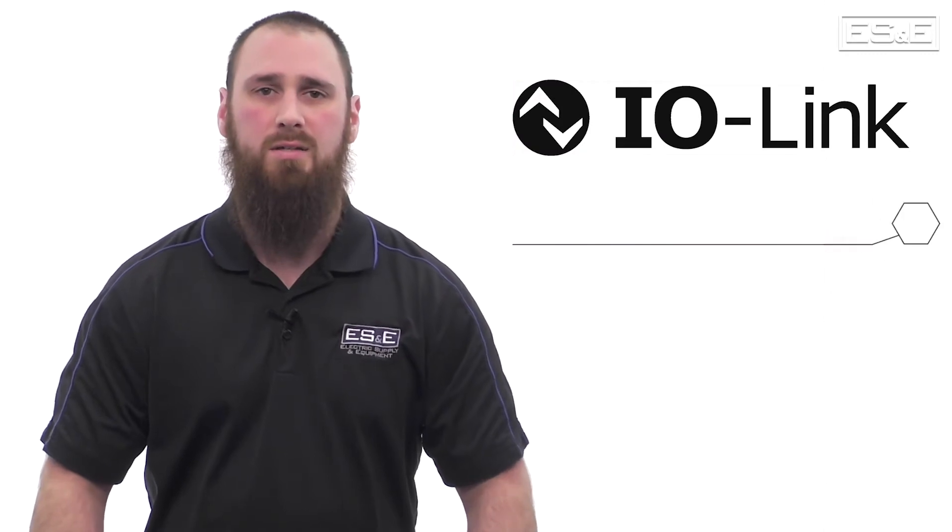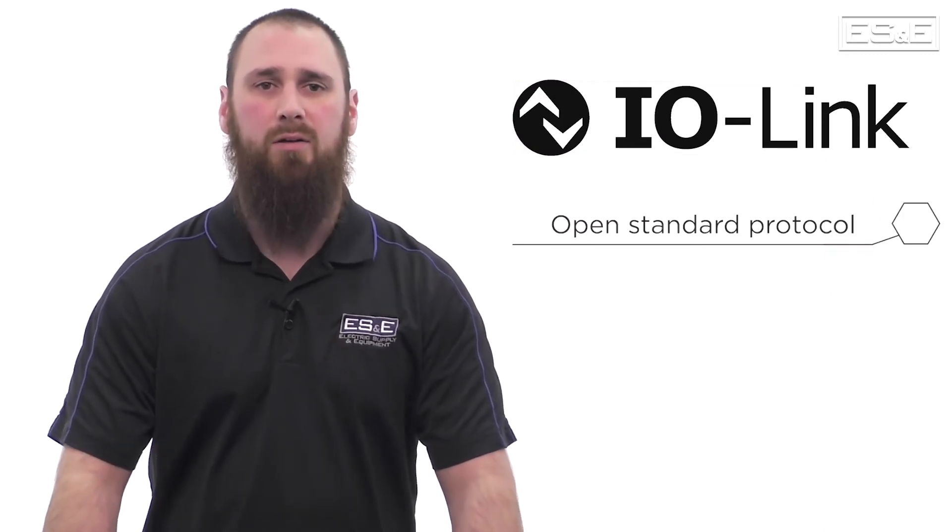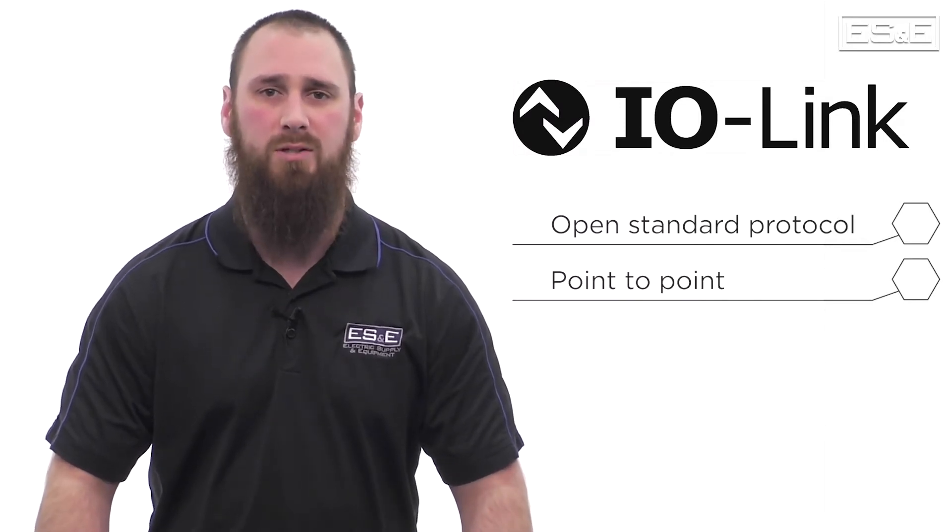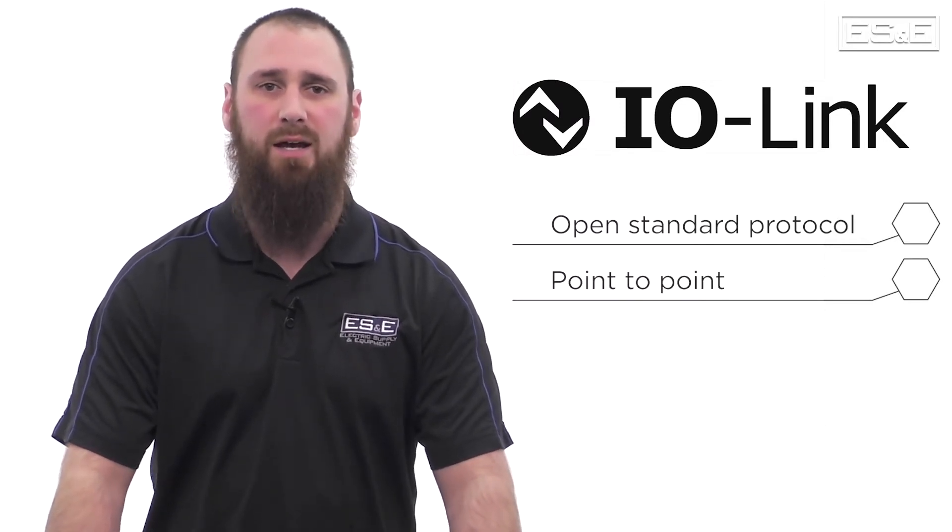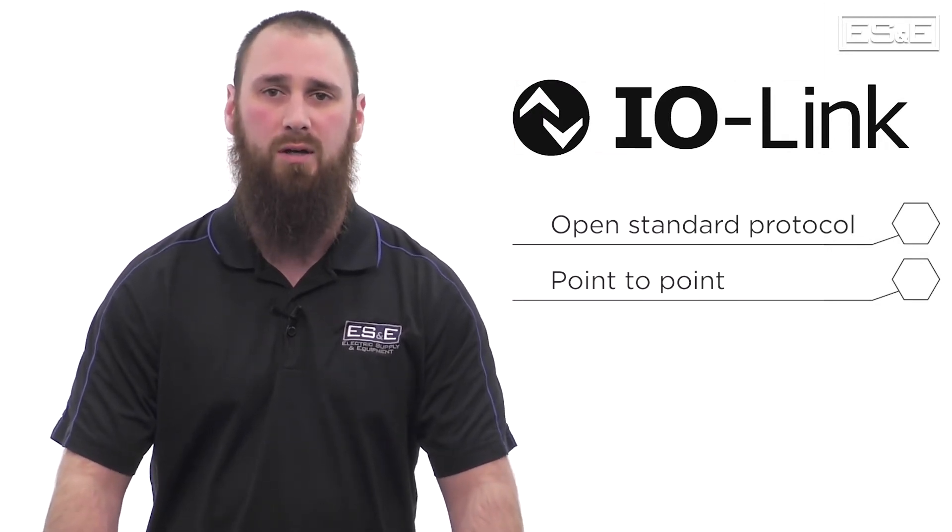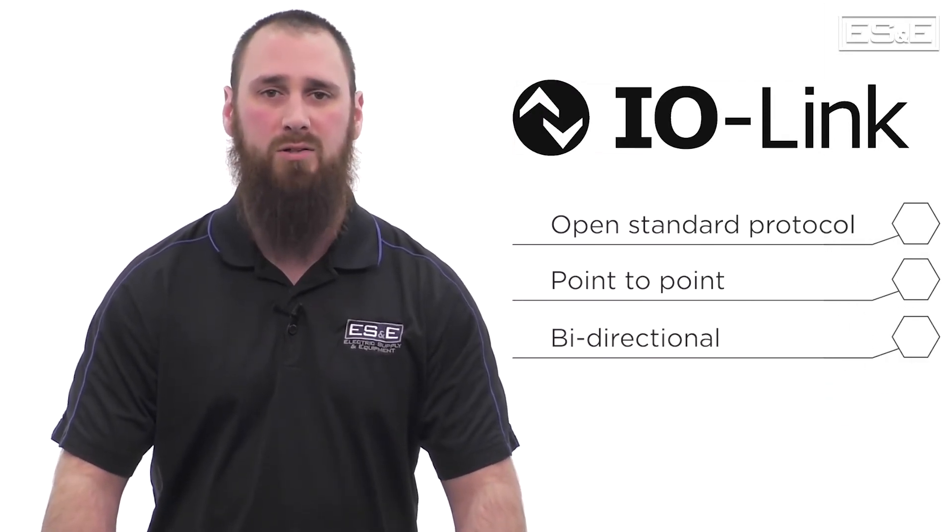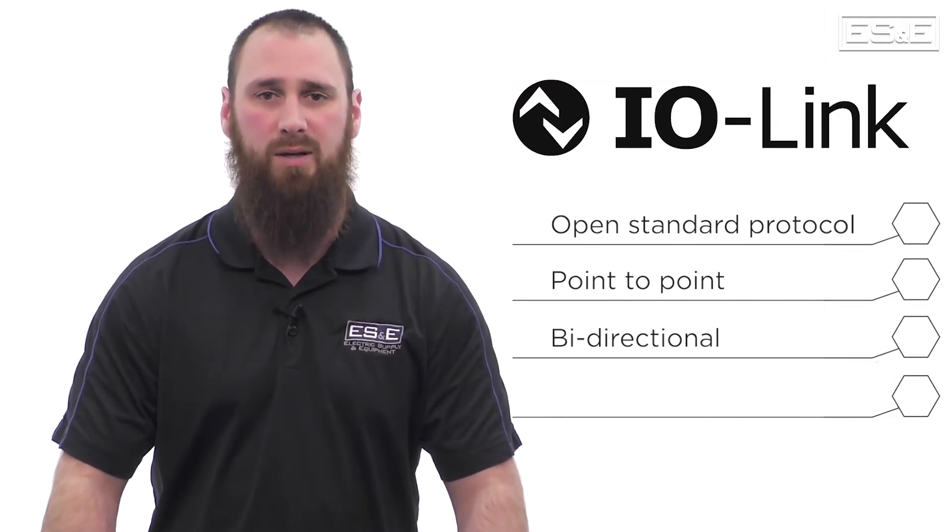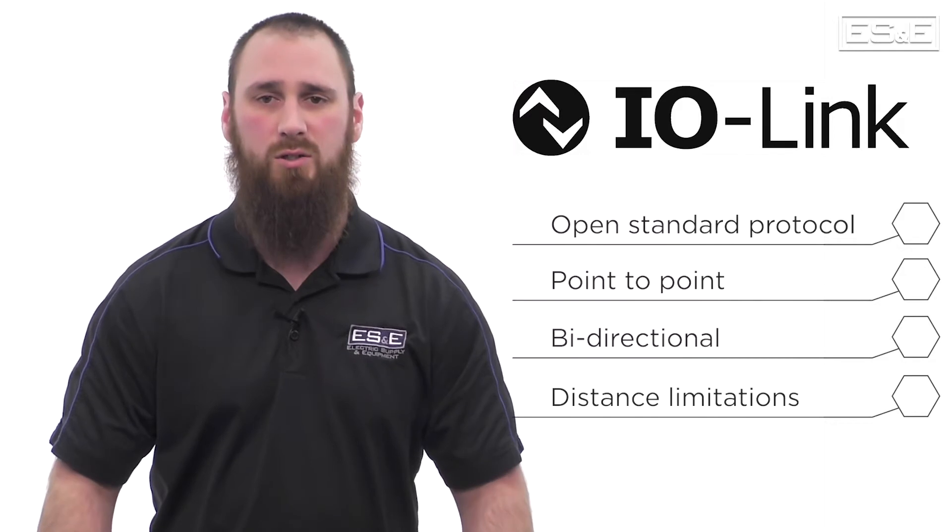IO-Link is a worldwide open standard communication protocol that works point-to-point. A point-to-point communication connection is specified as a connection between two separate endpoints or nodes. IO-Link is a bi-directional protocol, meaning it can both send and receive information, but it is limited to short distances.